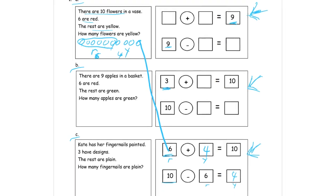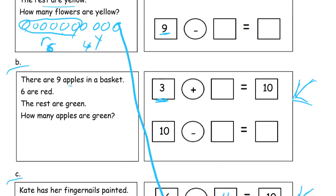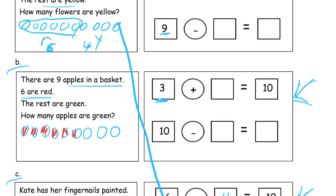Now the next number story — let's zoom in on B. There are nine apples in a basket. Six are red, and the rest are green. So we need nine apples total. We draw nine, then six are red — you can circle them or color them in. You don't have to go get crayons and color everything in, but if you want to have fun, go ahead. How many apples are green? You can see there are three.